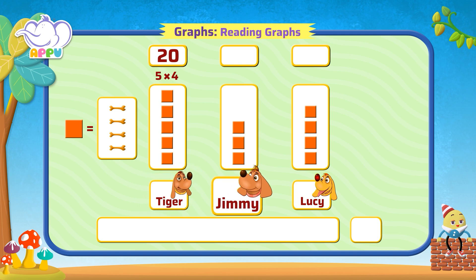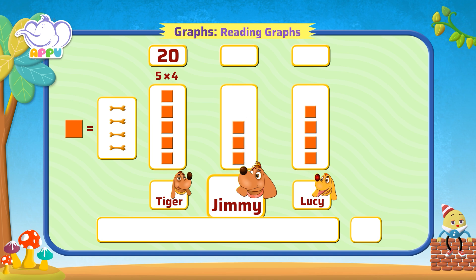There are three squares for Jimmy, which is three times four bones, that is equal to twelve bones.